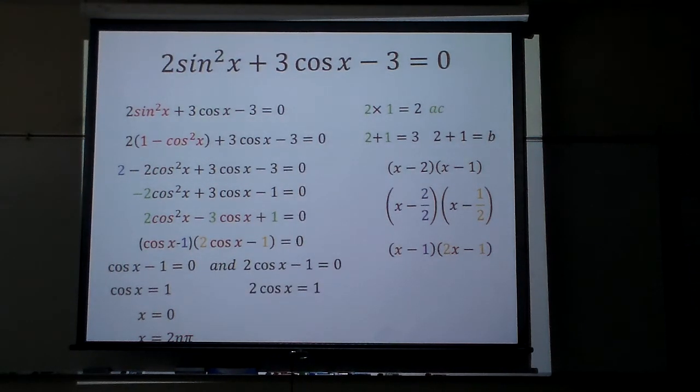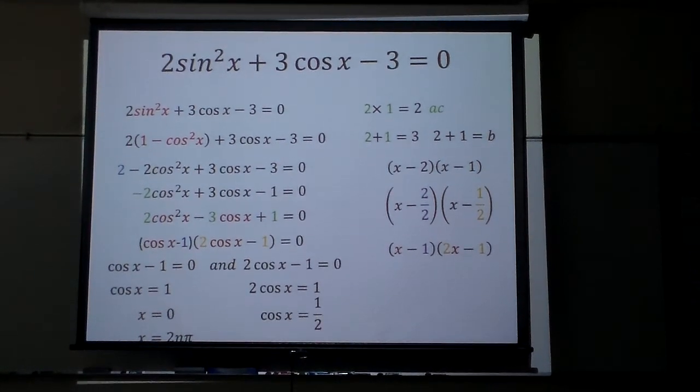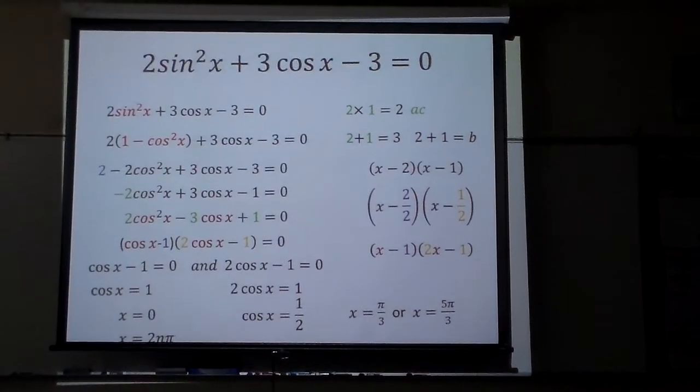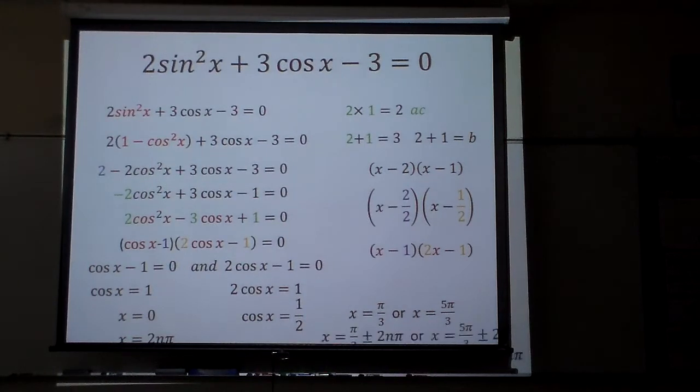And on the other one, I'm going to add 1 to each side. Divide by 2. And where does cosine equal 1 half? At pi over 3 or 5 pi over 3. But don't forget to add your what? Plus or minus 2n pi's to make it work.